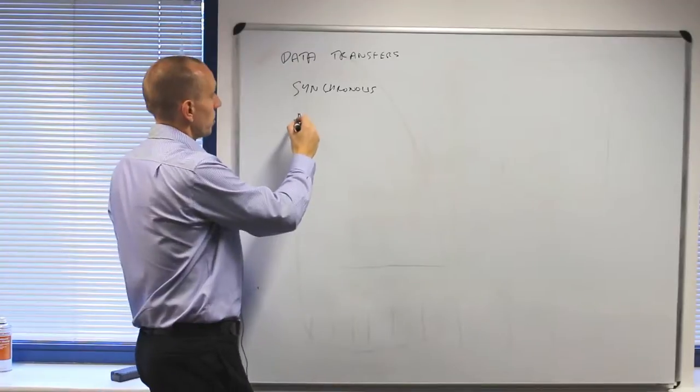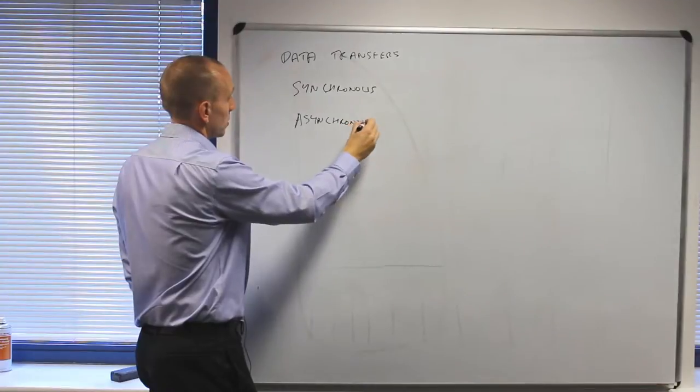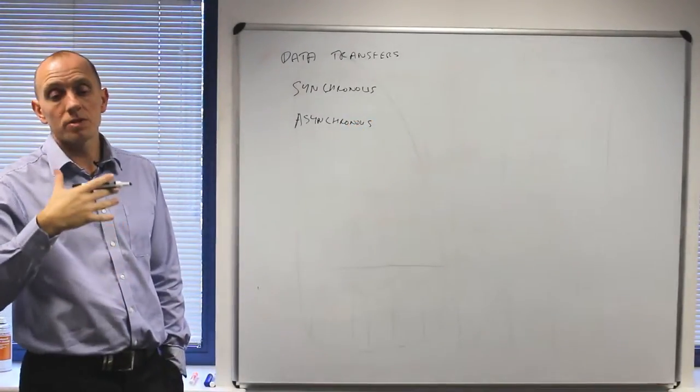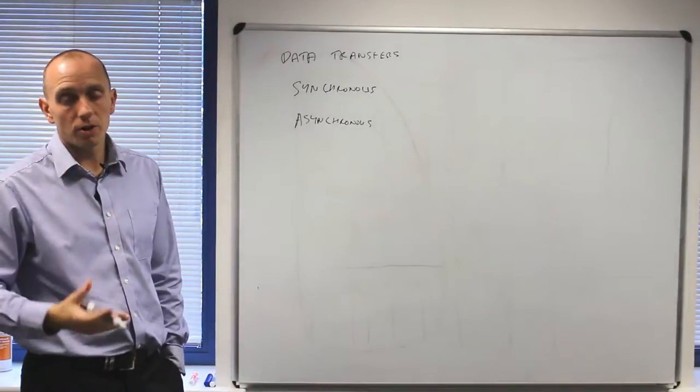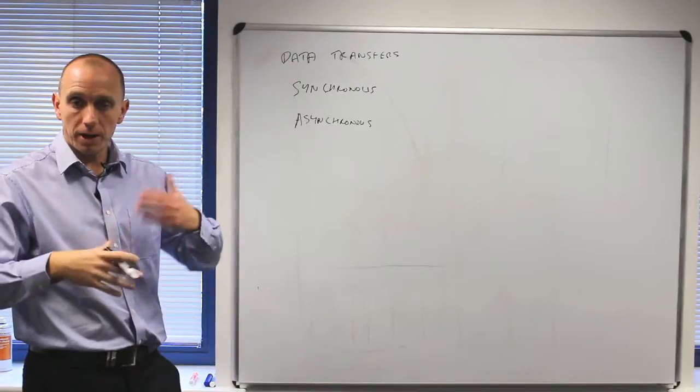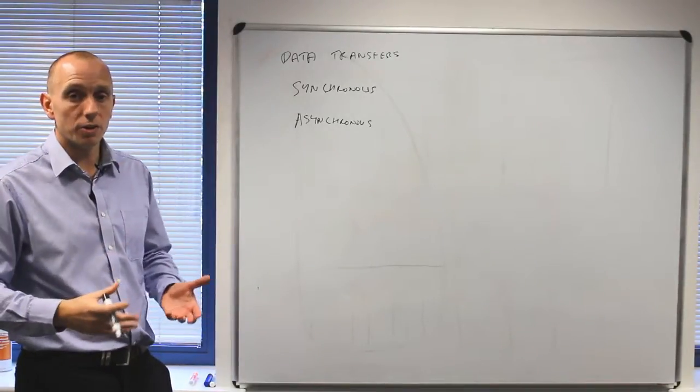The other type of data transfer is asynchronous and this type of data transfer only happens occasionally. You only send the data when you gather data. So you don't repeat the same pattern over and over again. When you receive a certain type of data you will send it whenever you get it.